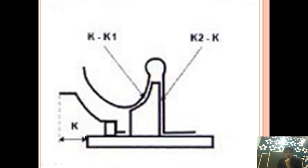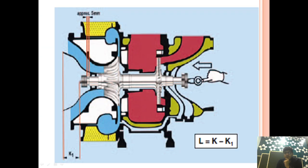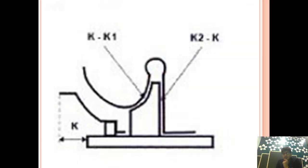We have taken the earlier K value during normal running. Now after pushing the rotor to the maximum on the turbine end, we are getting a clearance on the front part of the compressor and casing — this value is called L. The value K1 we are getting at this pushed position will be less than K, so K minus K1 gives us L. This is very clear.